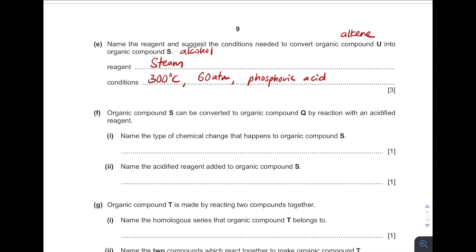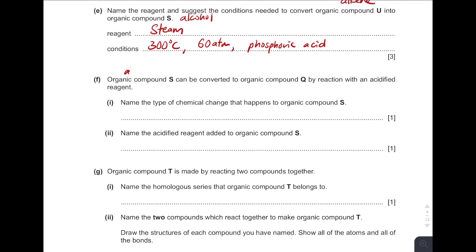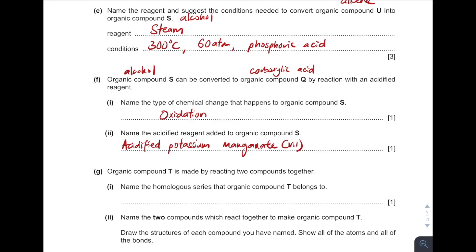Organic compound S, which is alcohol, converts to Q, which is carboxylic acid. From alcohol to carboxylic acid, name the type of chemical change — it is oxidation. What is the oxidizing agent needed? It is acidified potassium manganate(VII) solution. This is the most popular oxidizing agent.